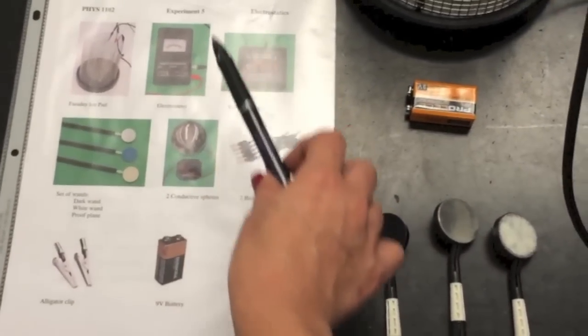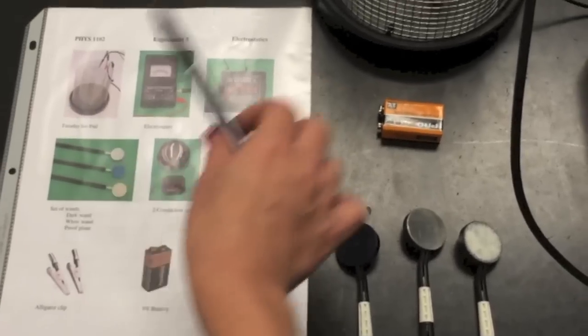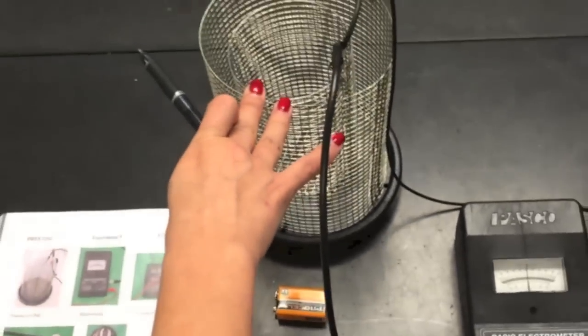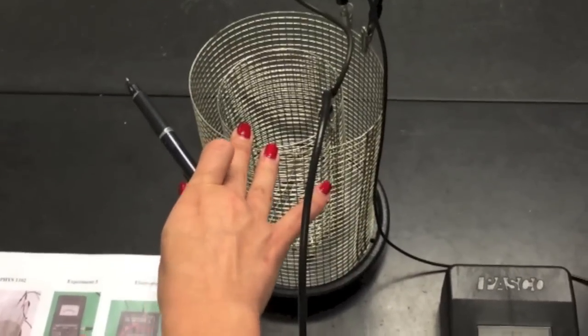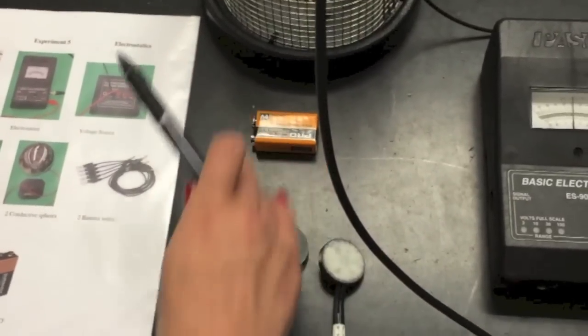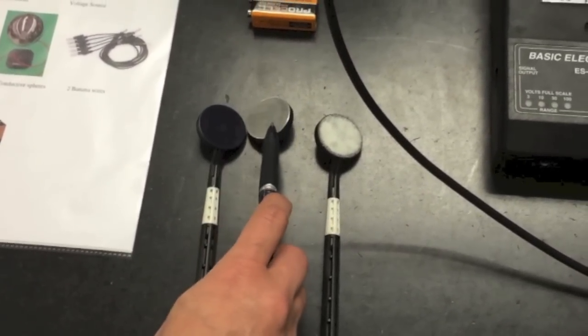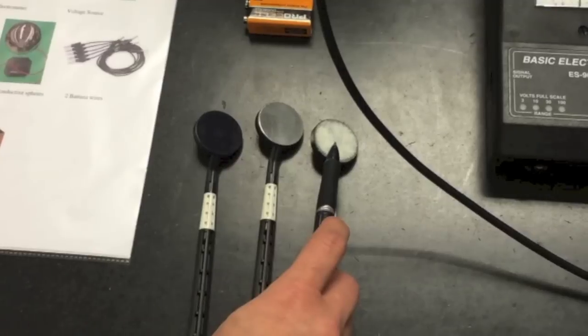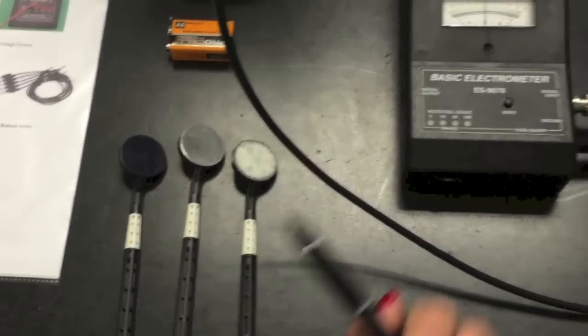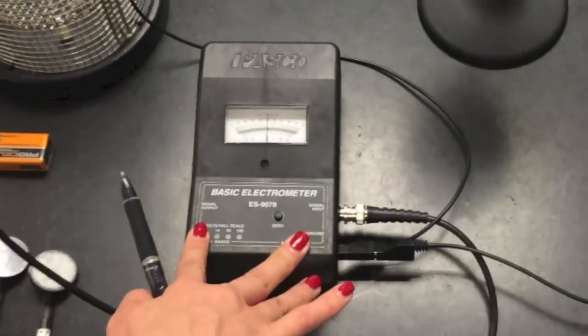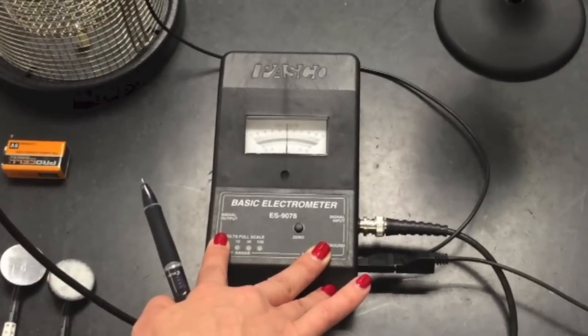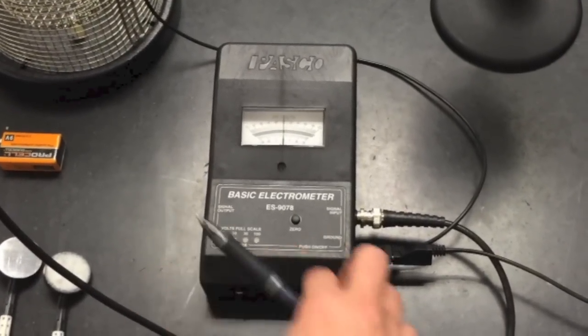This is an information sheet for this week's experiment. You will use a Faraday's ice pail, a 9 volt battery, three wands—blue, silver and white—where white and blue are charge producing wands, and a basic electrometer used to measure potential.